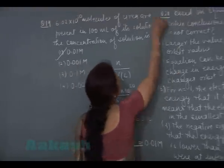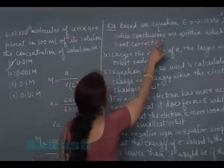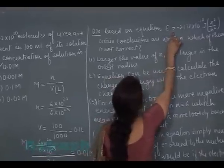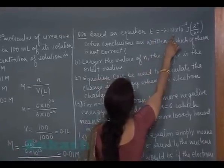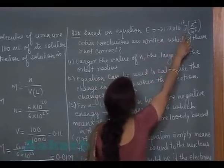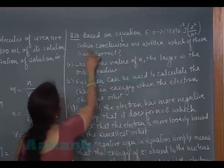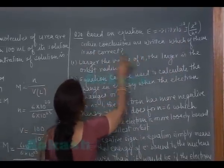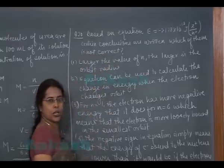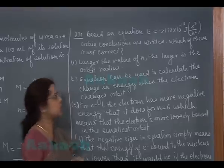The next question is question number 20. Based on equation E = -2.178 × 10^-18 joules × Z^2 / n^2, certain conclusions are written. Which of them is not correct? So here we have to find out which statement is incorrect.